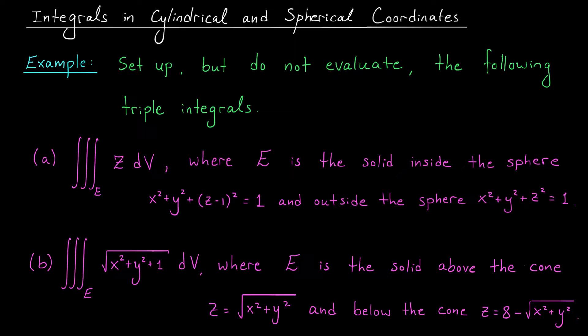In each of the examples below, I have a triple integral over some specified solid region E. In each case, we're going to choose a coordinate system to work in, either cylindrical coordinates or spherical coordinates. Once we've picked our system, we're going to set up the bounds and the integrand, but we're not actually going to worry about evaluating the integral today. These examples are a little more advanced than the examples from our previous lessons.